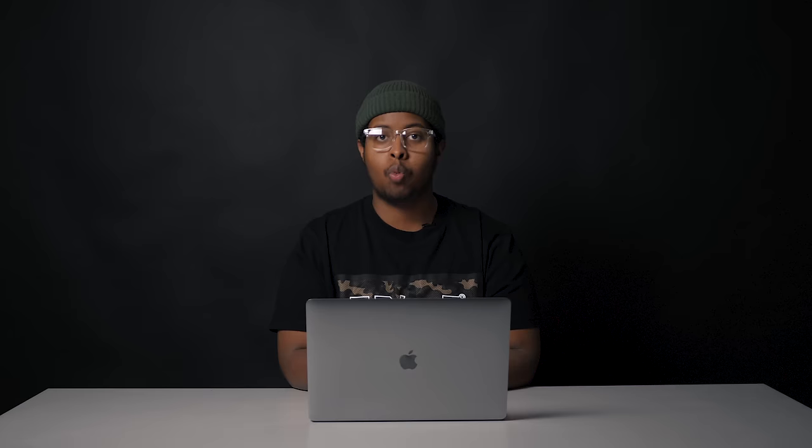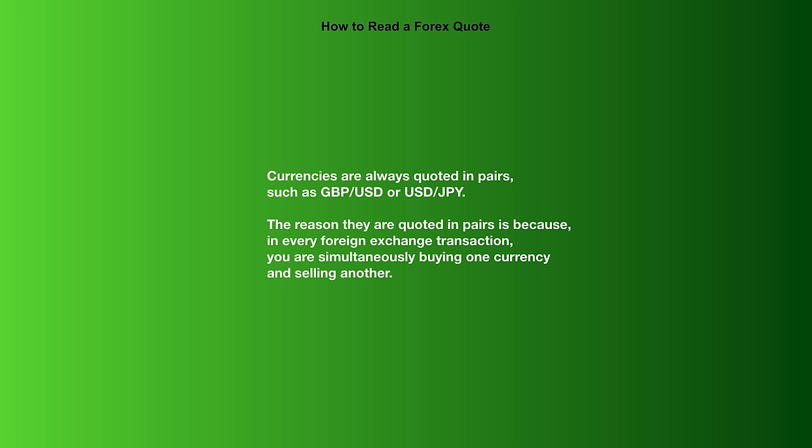Moving on, how do you make money trading Forex? The objective of trading is to exchange one currency for another in the expectation that the price will change. An exchange rate is simply the ratio of one currency valued against another currency. How do you read a Forex quote? Currencies are always quoted in pairs such as pound/USD or USD/JPY, because in every foreign exchange transaction you are simultaneously buying one currency and selling another.